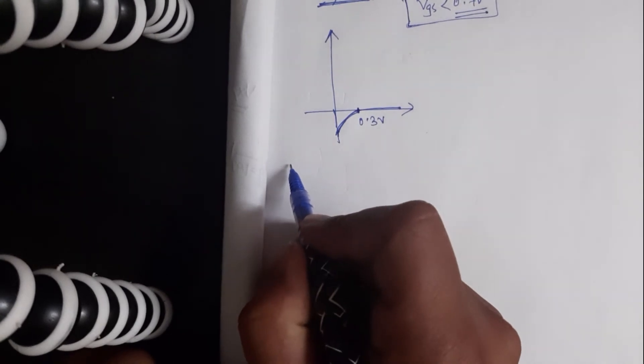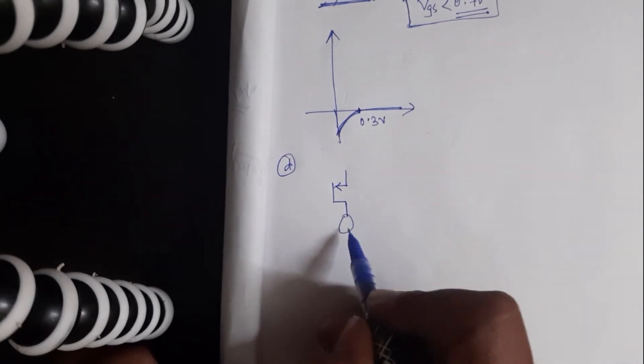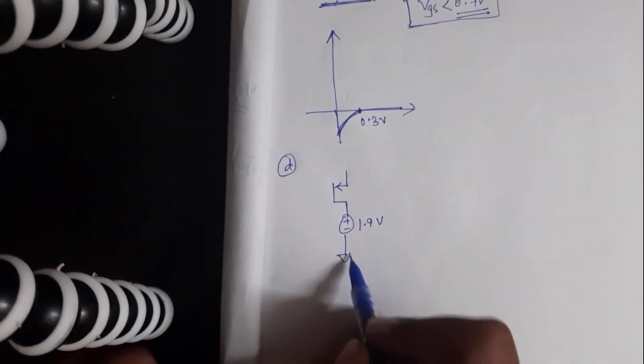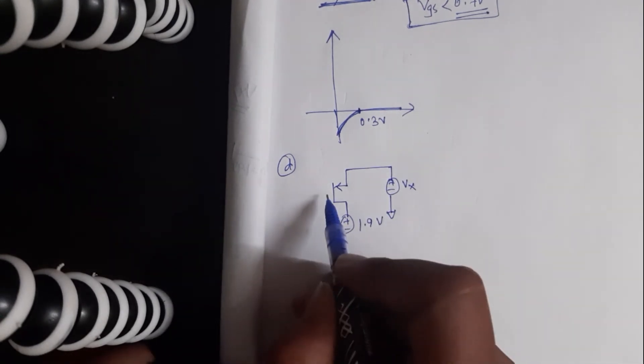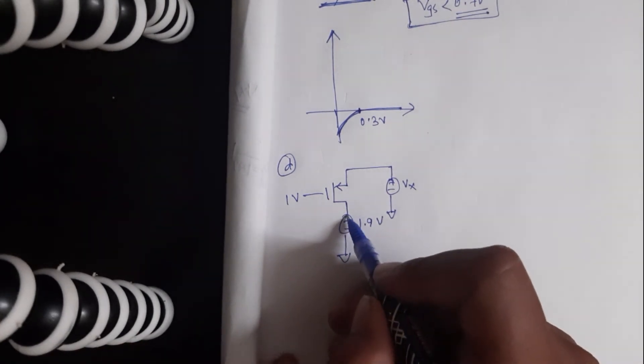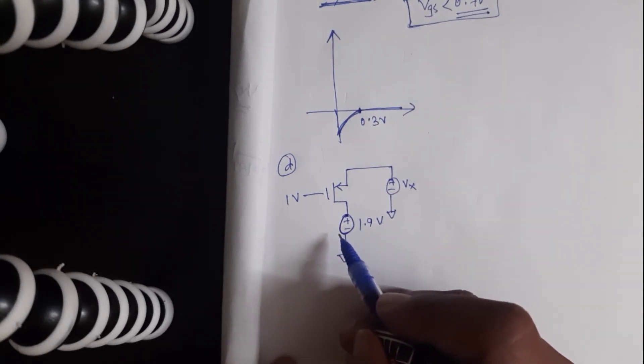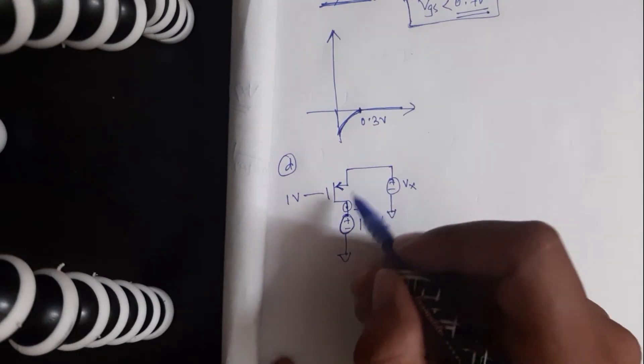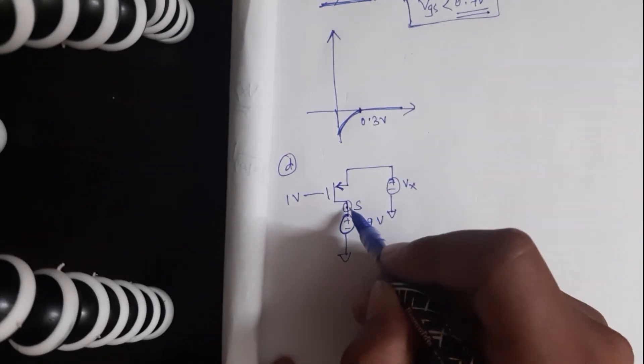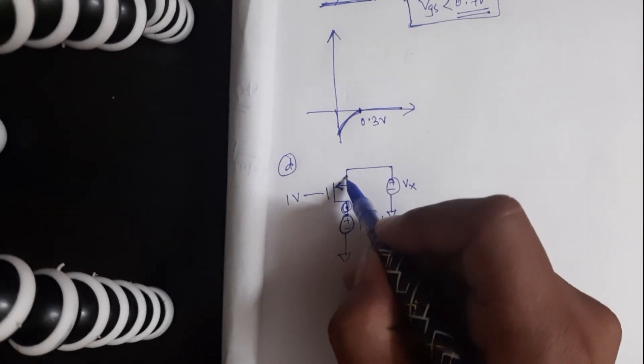Let us quickly move to the next part, part D. And here we have a PMOS and this is how the circuit looks like. The gate is connected to 1 volt. So in PMOS, the source is at a higher potential than the drain, so this node should naturally act as source, which is unlike what is depicted in the picture. But since the source and drain are interchangeable, this node is a source and this node is the drain.